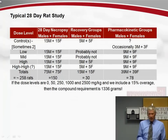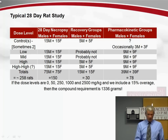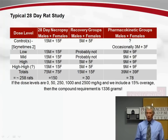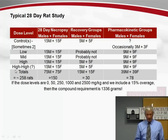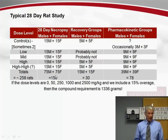Here's an example of a typical 28-day rat study. Looking at dose levels: there's always a control group, sometimes two. We have a low dose group, a mid dose group, a high dose group, and sometimes a high-high dose group. For a 28-day study, we enter 15 males and 15 females to each dose group — this adds up to 150 animals across the dosing period.